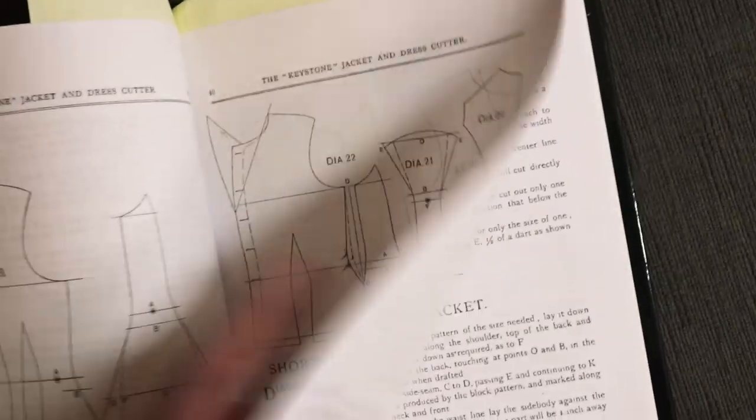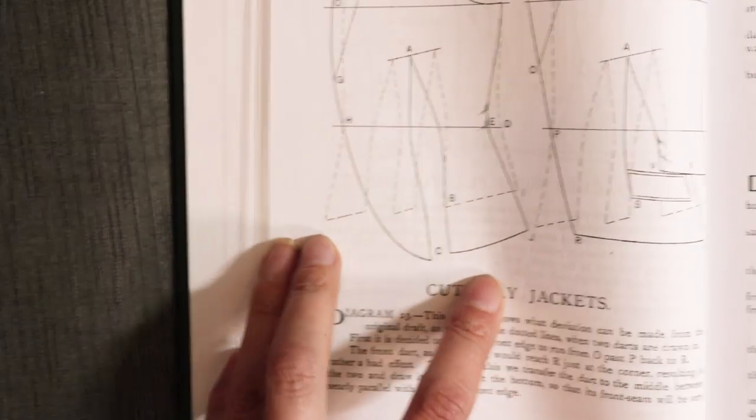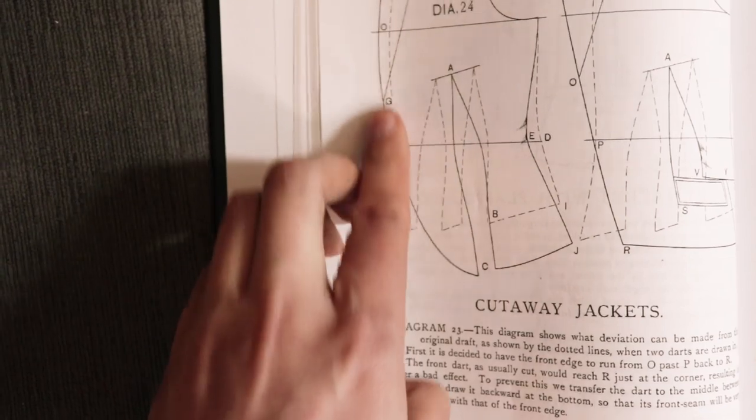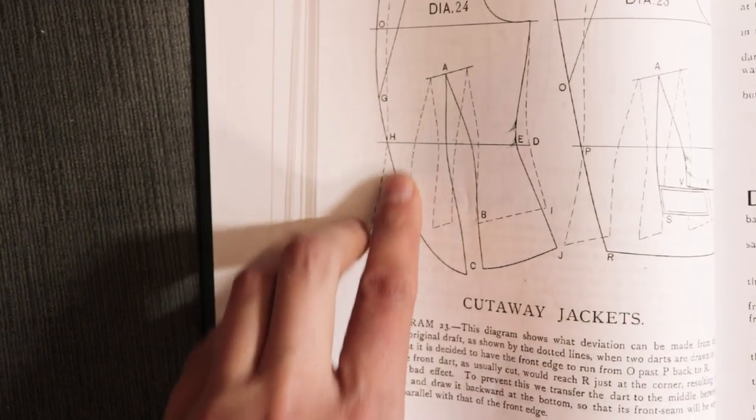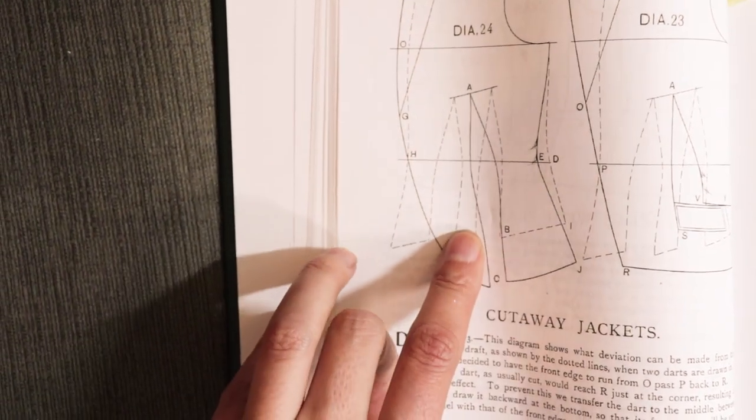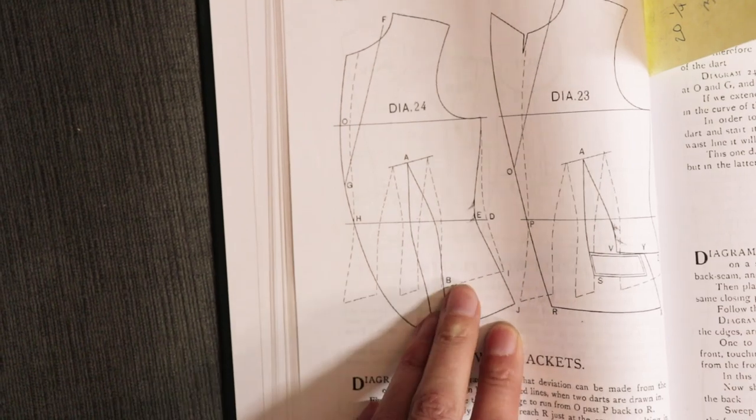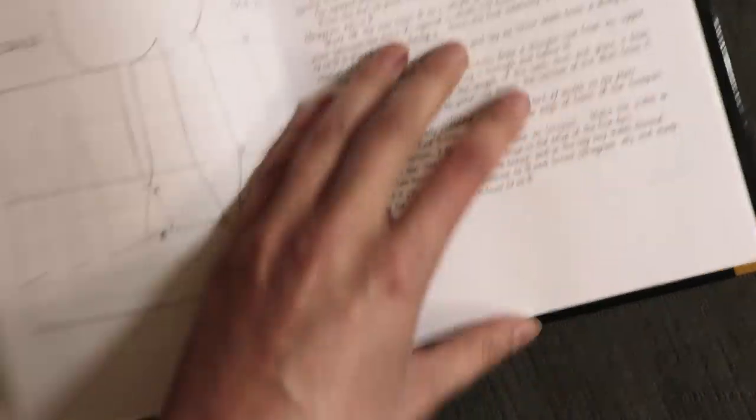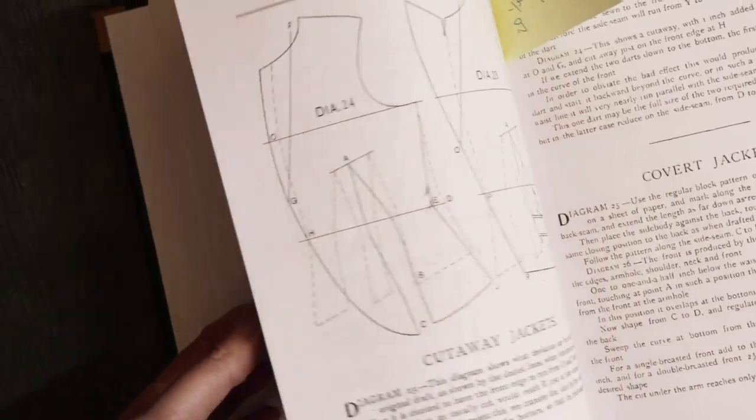And then in addition to that, I'm also going to do a cutaway front. So instead of it closing all the way down, it kind of has a couple buttons here and then it cuts away. And I'll have to reduce the number of darts to one. Hopefully this won't be too difficult. I also have to do the collar and sleeves. And they are on this thing somewhere. I'll figure that after I do the body.